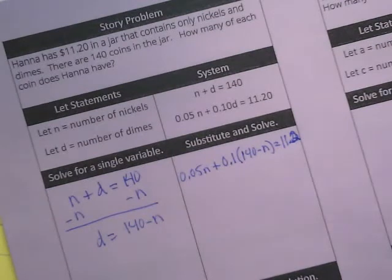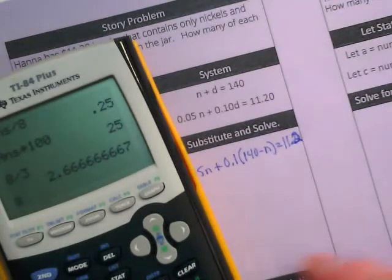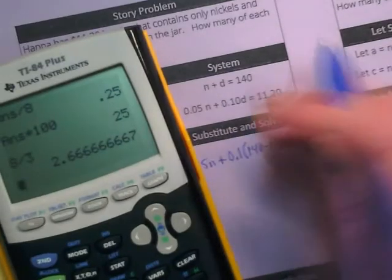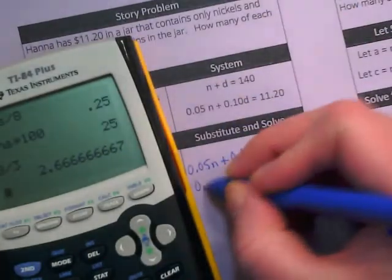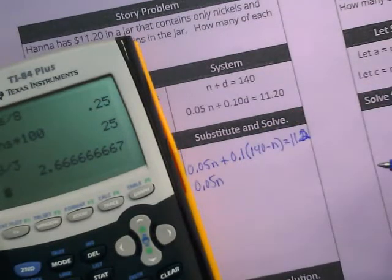Next step is distribution. I don't trust myself when multiplying decimals. I always use my calculator. 0.05N just comes down to the next row, and we're going to do 0.1 times 140. What am I going to get? 14.